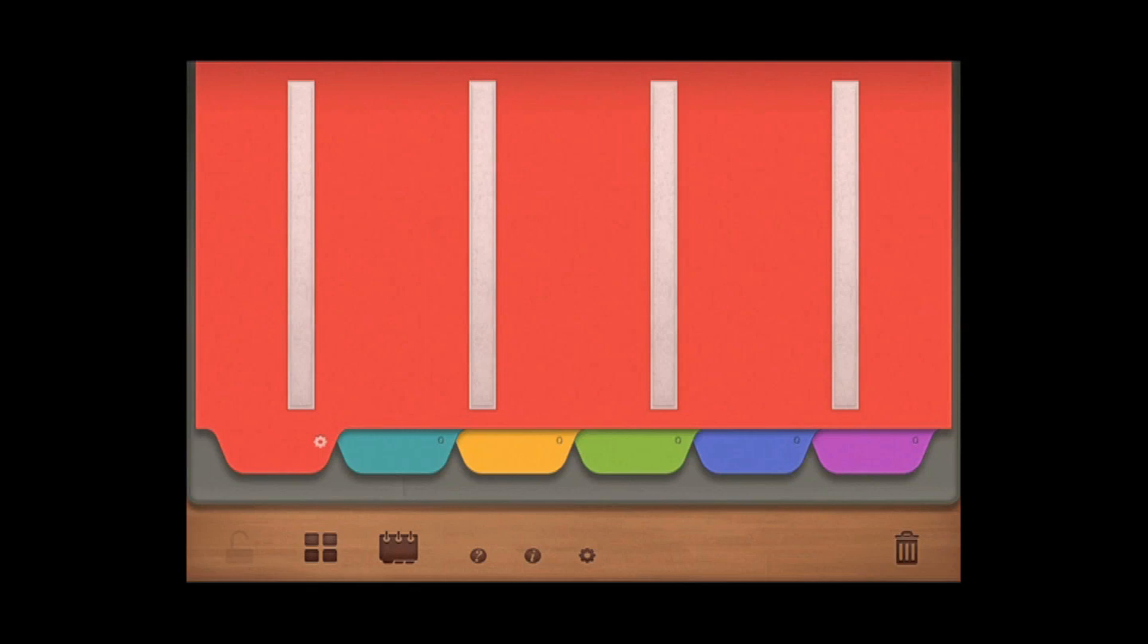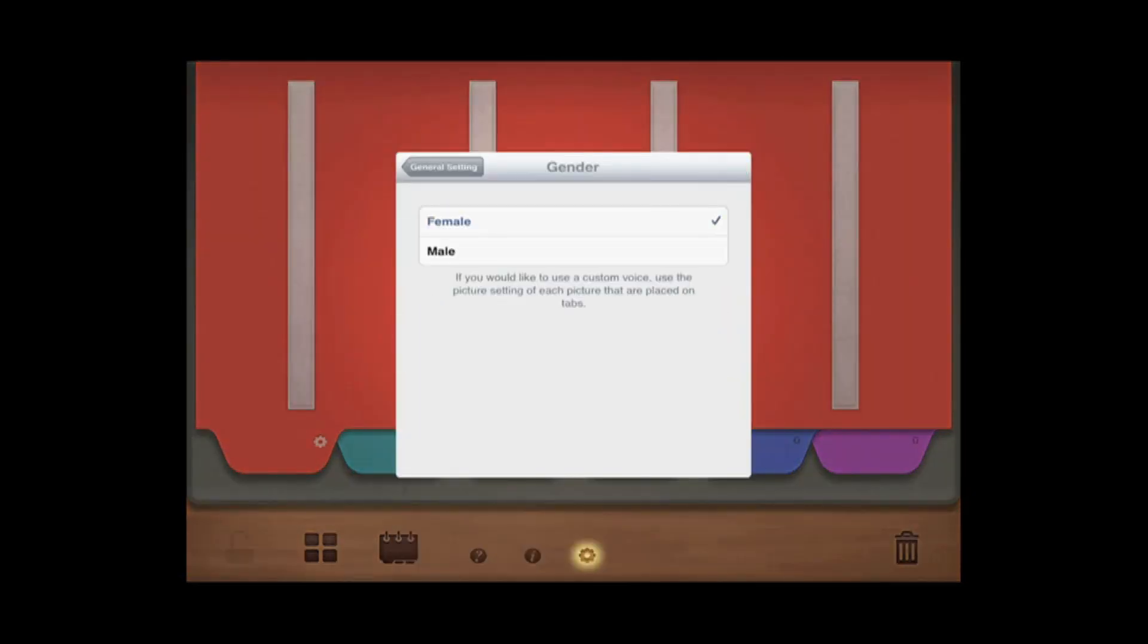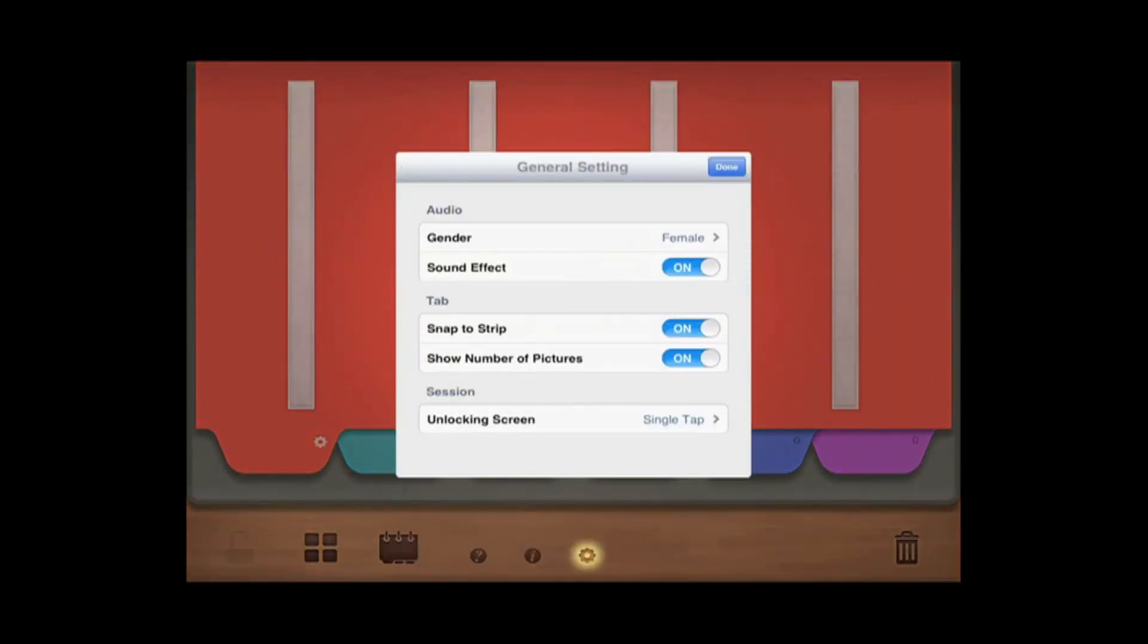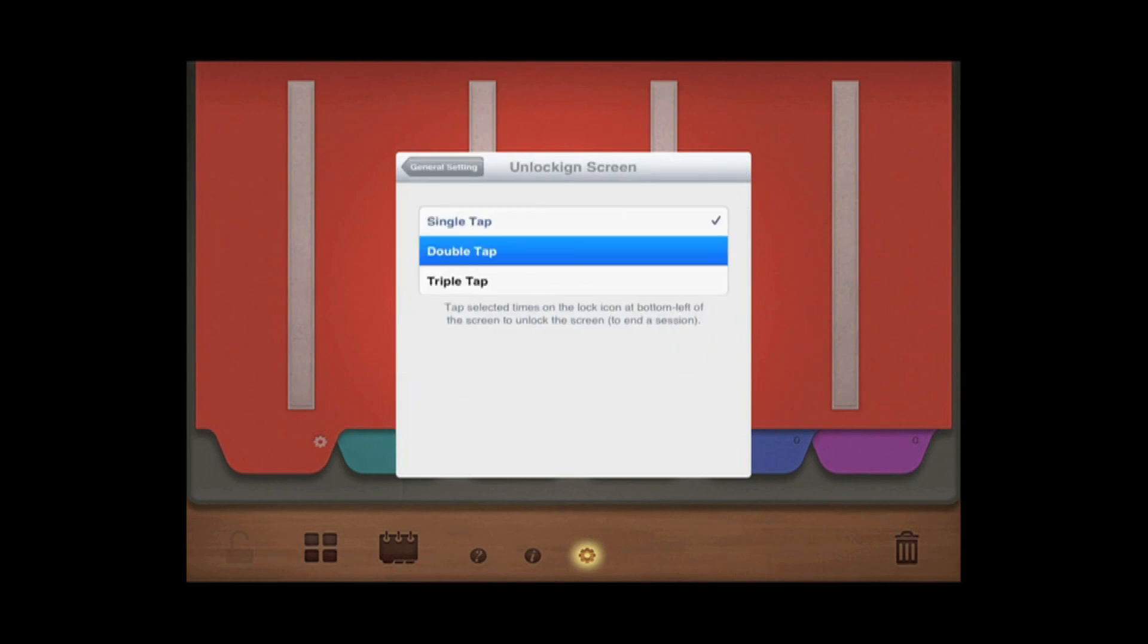The general settings menu allows you to choose various audio settings such as gender, whether or not to align pictures to the Velcro strips, and if you want a reminder of the number of pictures on each tab. To prevent your student from accidentally accessing the settings and options, change your unlock setting under the Sessions option to either a double or triple tap.